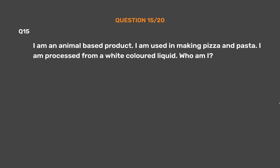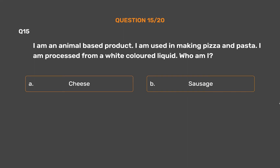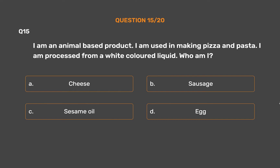Question number 15. I am an animal-based product. I am used in making pizza and pasta. I am processed from a white colored liquid. Who am I? Option A, Cheese. Option B, Sausage. Option C, Sesame oil. Option D, Egg.